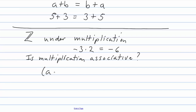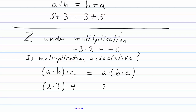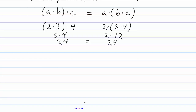For any three integers a, b, and c, is (a times b) times c equal to a times (b times c)? The answer is yes. For example, (2 times 3) times 4: 2 times 3 is 6, and 6 times 4 is 24. On the other side, 3 times 4 is 12, and 2 times 12 is also 24. So multiplication is indeed associative on the integers.